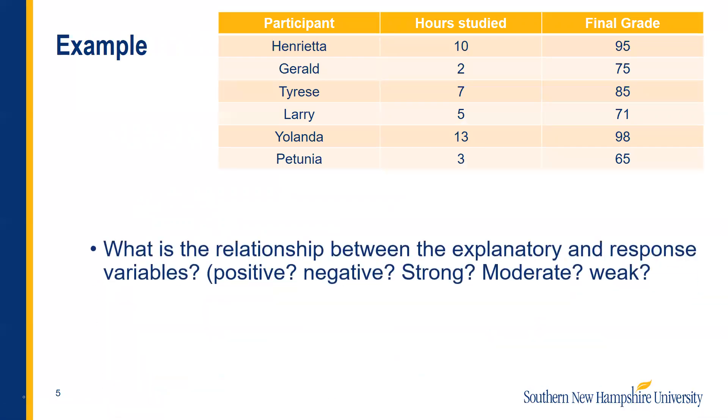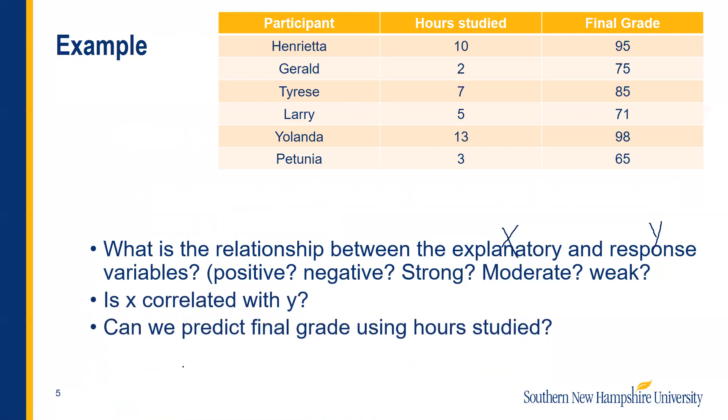So we have this example here. And we want to know what is the relationship between the explanatory x values and the response y values. What is the relationship between these two variables? We'll look to see if it's a positive, negative, if it's a strong, moderate, or weak correlation. And to do that, we're going to find the correlation coefficient and decide if x is correlated to y. Because the reason we want to do any of this stuff is to see can we predict the final grade based on the hours studied.